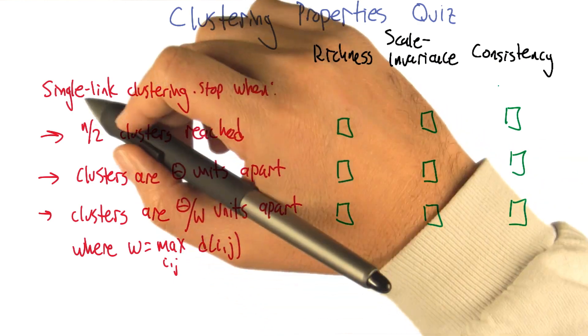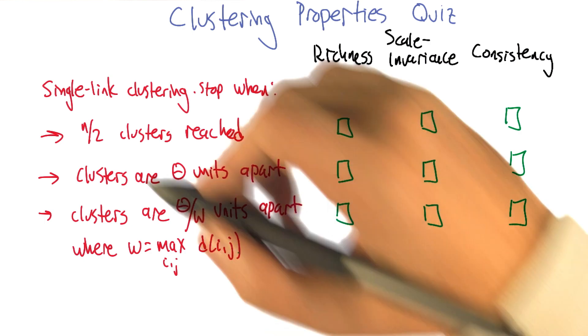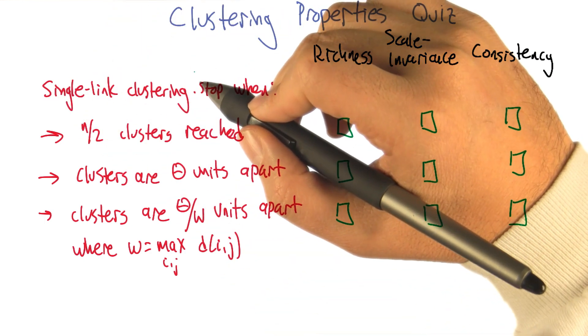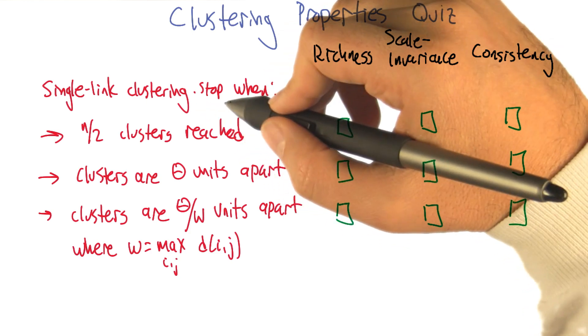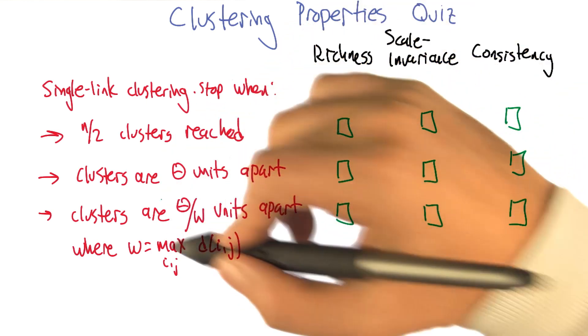And so the algorithms are all going to be variations of the first clustering algorithm we talked about, single link clustering. And so what we're going to do is run single link clustering, but to make it a clustering algorithm, we have to decide under what conditions we're going to stop building our clusters. And I've got three different conditions and that defines our three different algorithms.